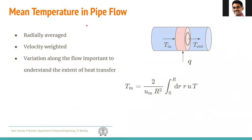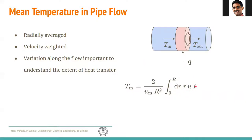To recap, we defined mean temperature in pipe flow as a radially averaged, velocity-weighted value of the local temperature. Note that this is not a plane average, but a velocity-weighted average. This is important because by knowing the mean temperature variation along the direction of flow, we can understand the extent of heat transfer.